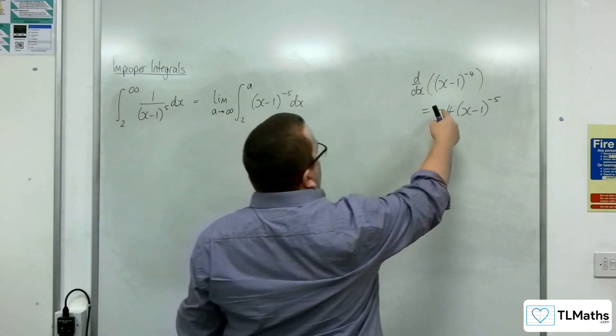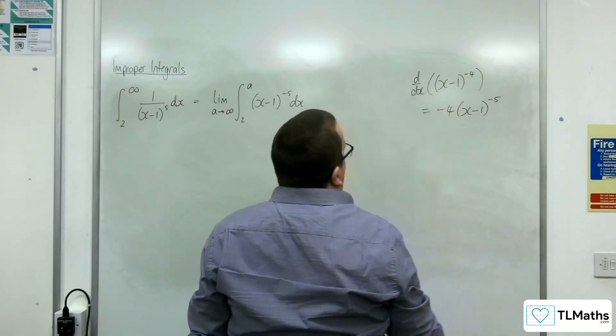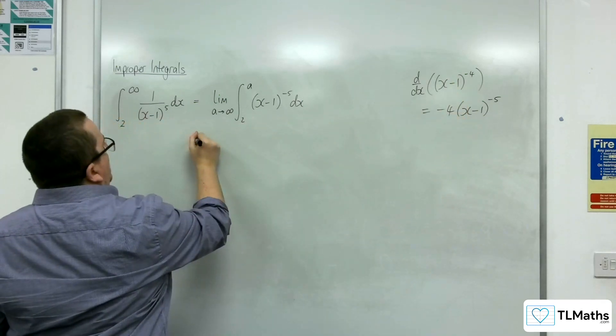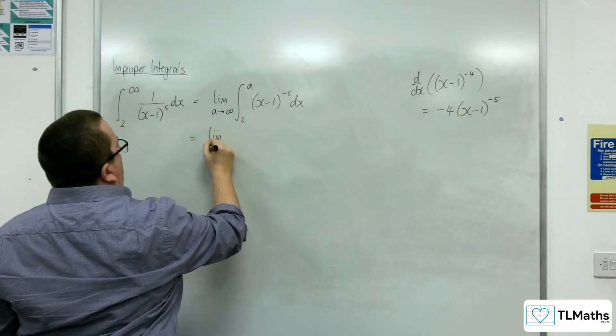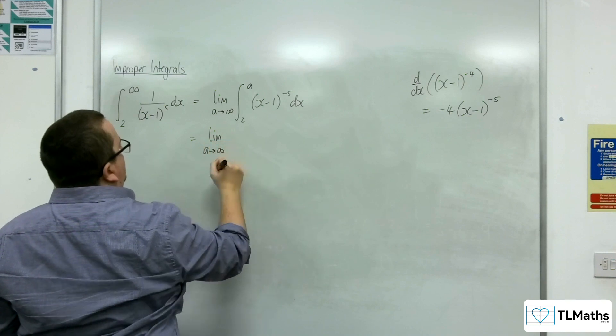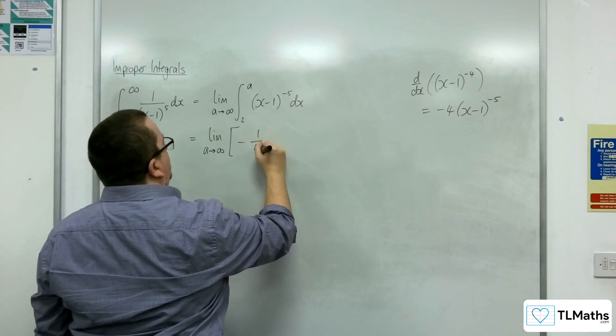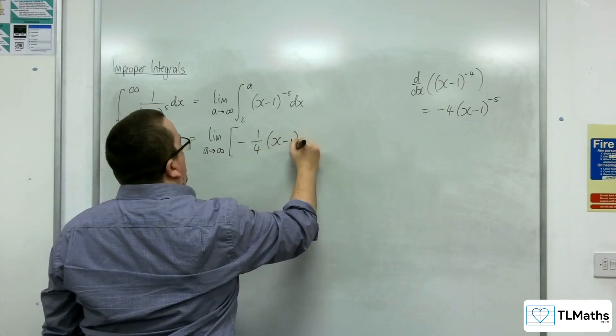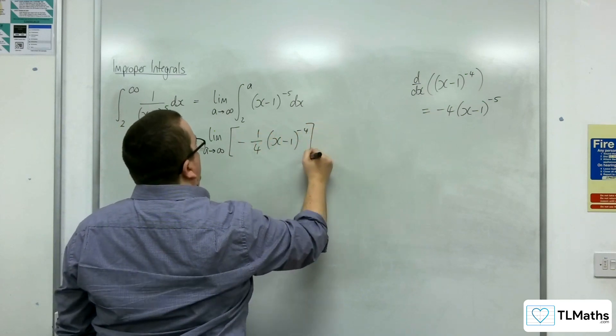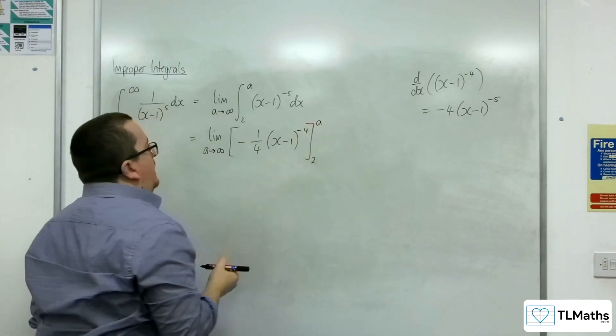Effectively, you divide both sides of your equation by minus 4. So this is the limit as A tends to infinity of minus 1 quarter (x minus 1) to the minus 4 evaluated between 2 and A.